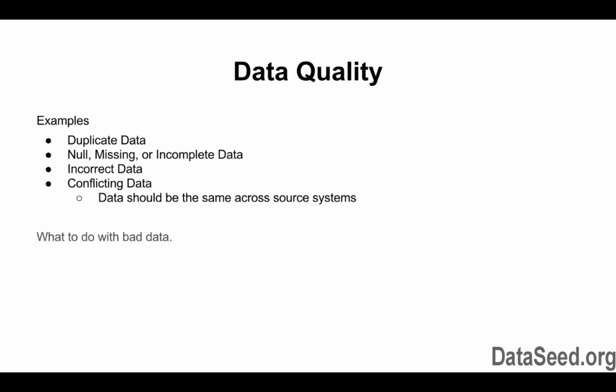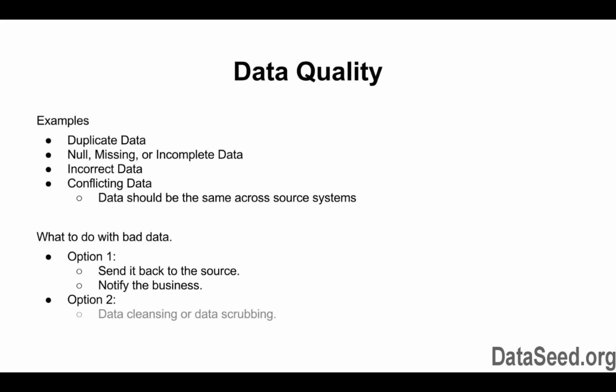So what do you do if you have bad data quality? Option number one — the 'if you're lucky' option — the source will be in line with your business or your BI initiatives, and you can send the data back to them for correction and notify the business. Option number two is you're going to have to cleanse the data, a process called data cleansing or data scrubbing. This can be a manual process or an automated process; you can either set up rules, or there are systems to help you with this data cleansing process.